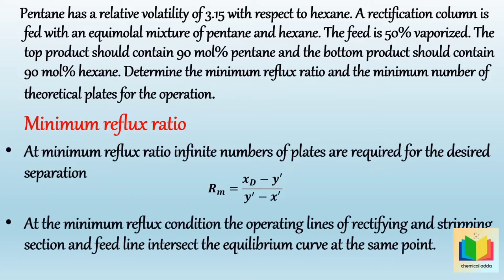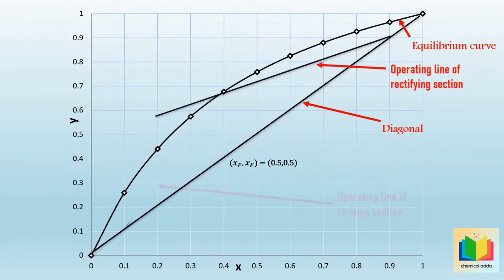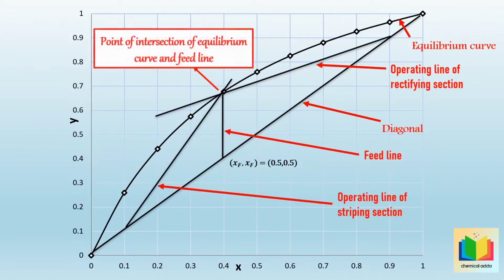At the minimum reflux condition, the operating lines of the rectifying and stripping sections and the feed line intersect the equilibrium curve at the same point. At that point of intersection, steps become very close together, and hence a zone of nearly constant composition is formed near the feed plate. From the graph we can see that the operating line of the rectifying section, stripping section, and feed line intersect the equilibrium curve at the same point — this is the condition of minimum reflux ratio — giving coordinates Y-dash and X-dash. To calculate RM, we first have to find the point of intersection by drawing the feed line and one of the operating lines.